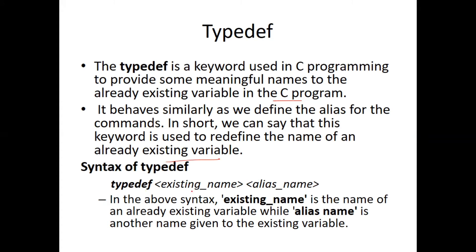The syntax is: typedef existing_name alias_name. The existing name is the name of the already existing variable, while the alias name is the other name given to the existing variable. For example, typedef int xyz gives xyz as a new name for the int data type.